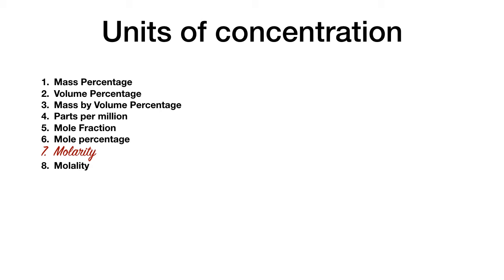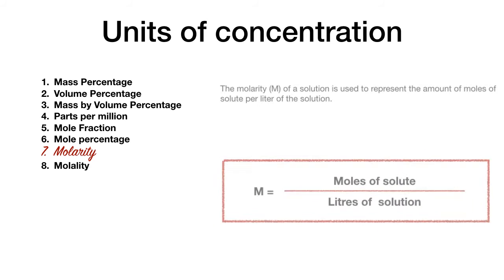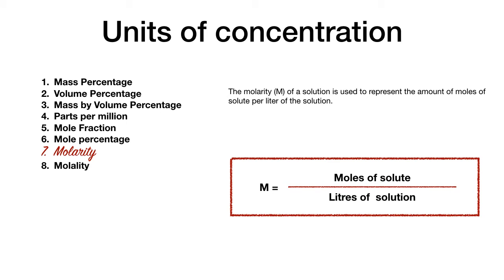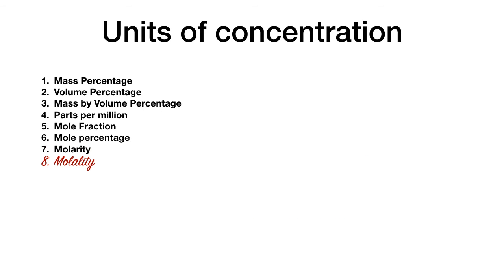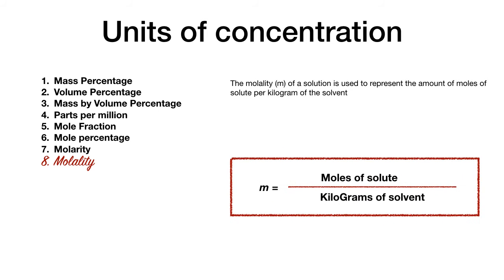Molarity is the most important unit — defined as number of moles of solute divided by volume of solution in litres. It is denoted by capital M and is commonly used in titrations. Molality is defined as moles of solute divided by mass of solvent in kilograms. Molality will be used when discussing colligative properties in later topics. Be very careful about the units, as they are important for numericals.